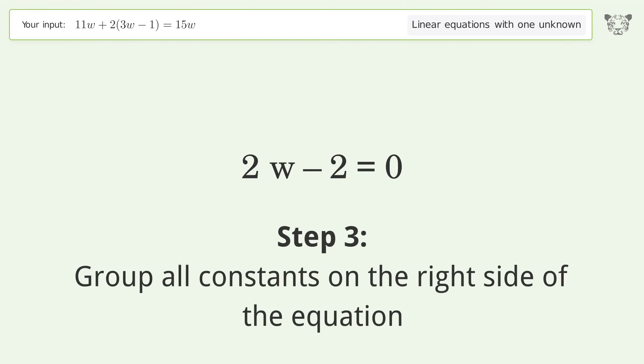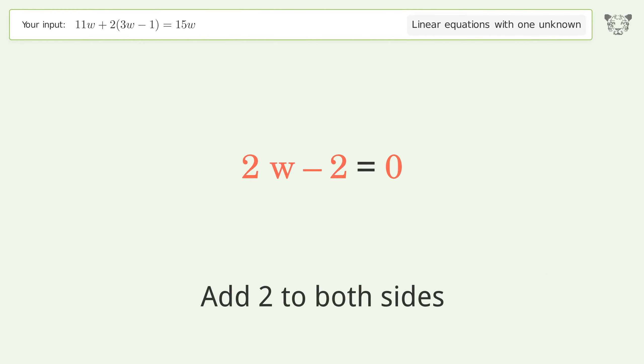Group all constants on the right side of the equation. Add 2 to both sides. Simplify the arithmetic.